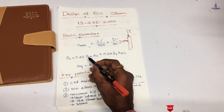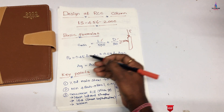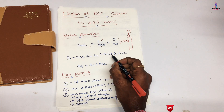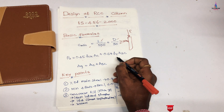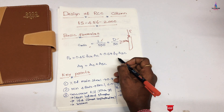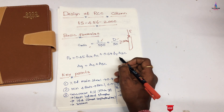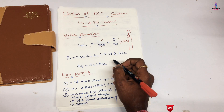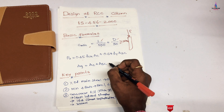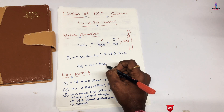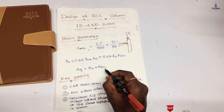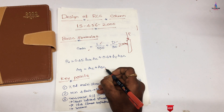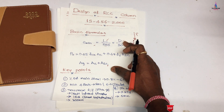The second formula is Pu = 0.45 × fck × Ac + 0.65 × fy × As, as per the IS 456 codal provision. The third formula relates Ag (gross area), Ac (concrete area), and As (steel area): Ag = Ac + As. These are the three basic formulas for column design.